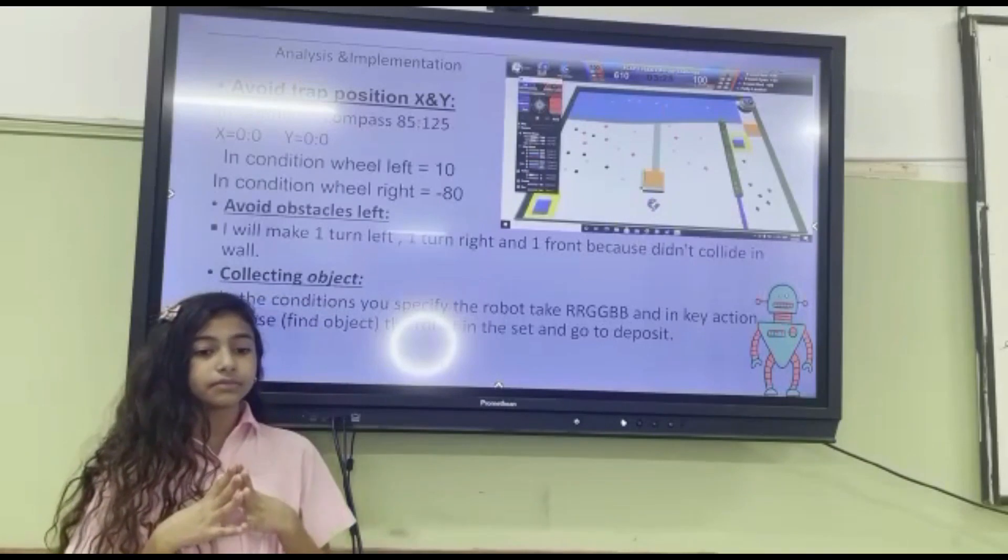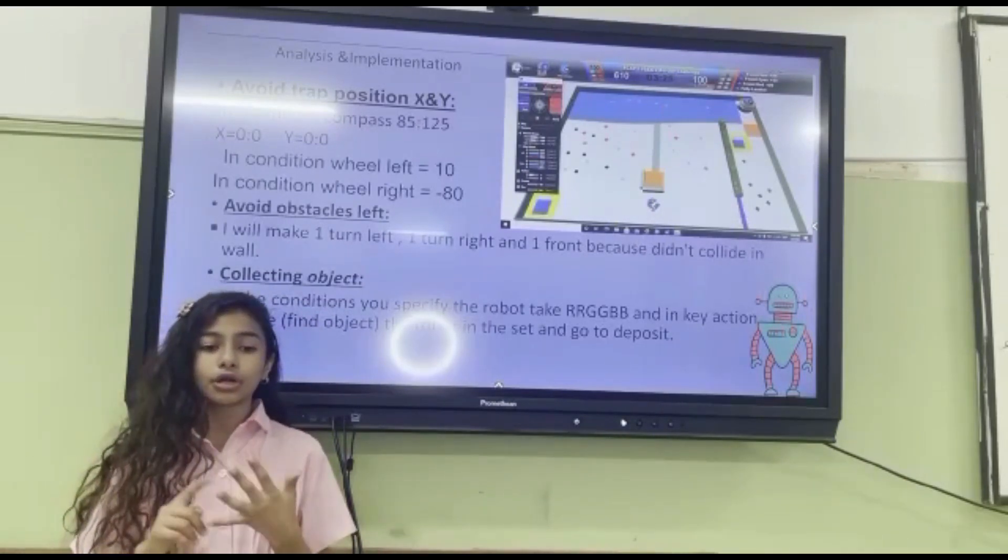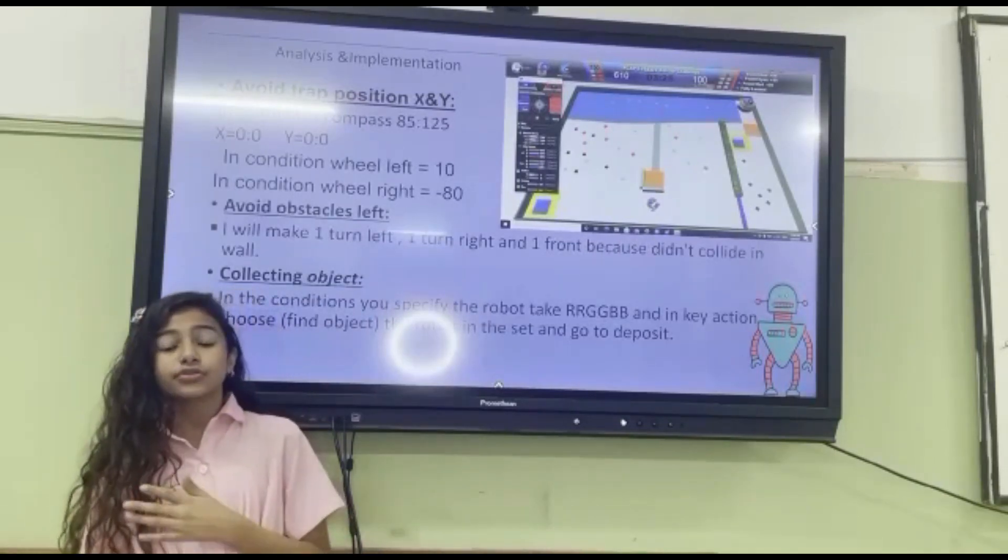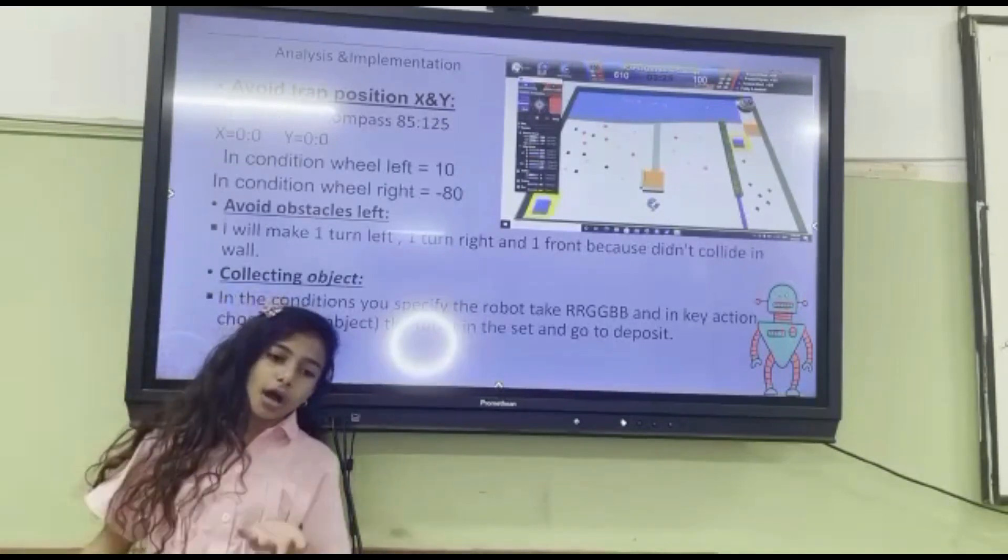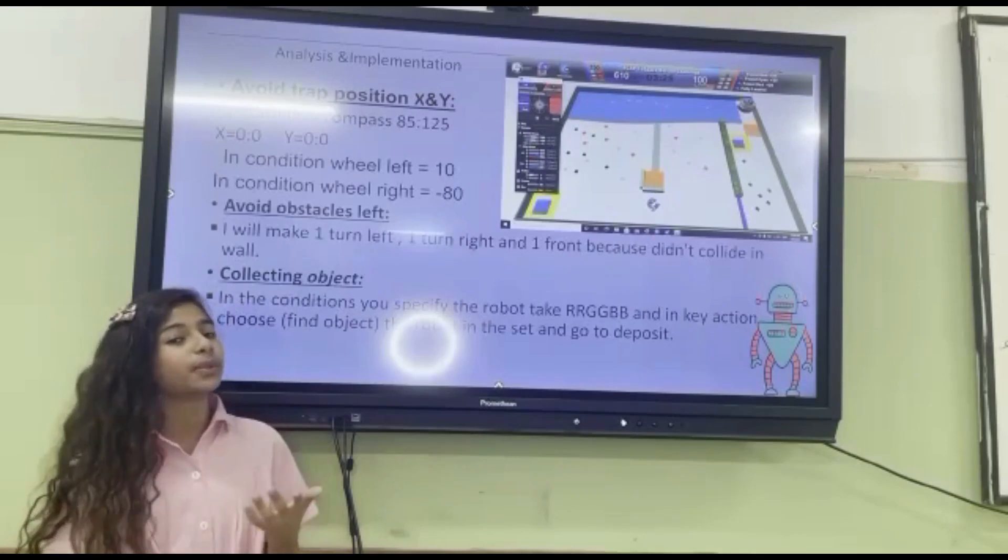In condition you specify the robot ARDDPP, and in the key action choose 5 objects. Then robot is set and goes to the buzzer.